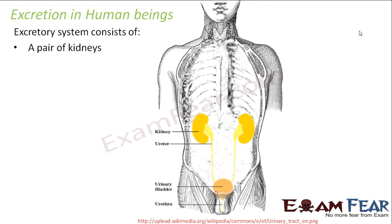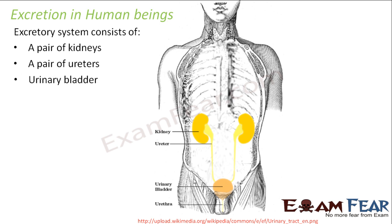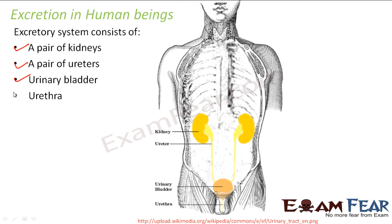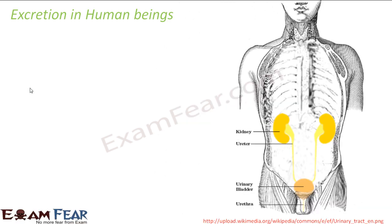This system consists of a pair of kidneys — the two bean-shaped structures you can see here — a pair of ureters, which are the tube-like structures, a urinary bladder shown here in peach color, and a urethra — this small opening. These four organs together form the excretory system in human beings.